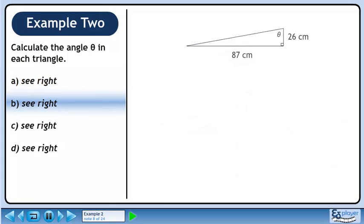Now we'll move on to part B. Label the sides of the triangle. We know the opposite and adjacent sides, so let's use the tangent ratio to solve for the unknown angle. The opposite side is 87 cm and the adjacent side is 26 cm. Divide to get 3.3462. Use inverse tan to get the angle 73 degrees.